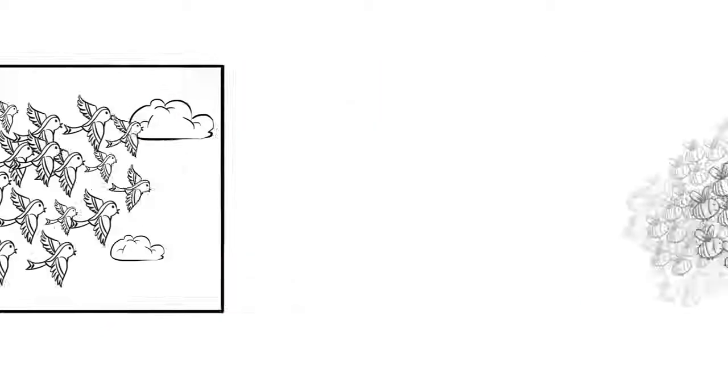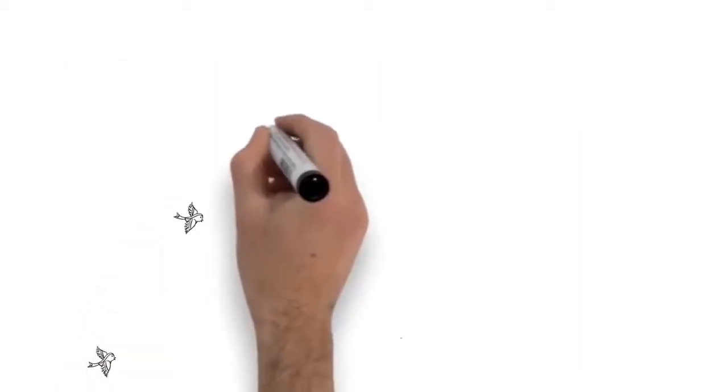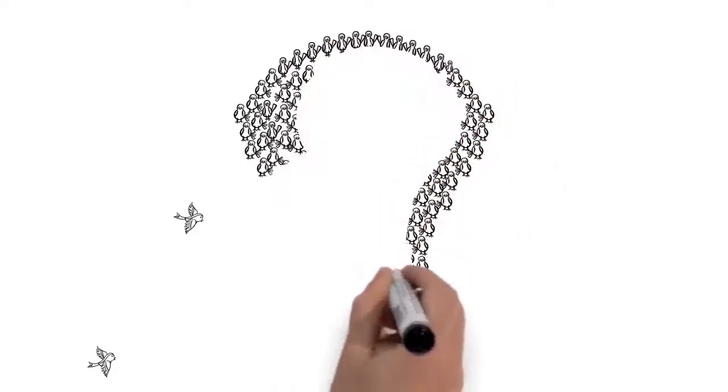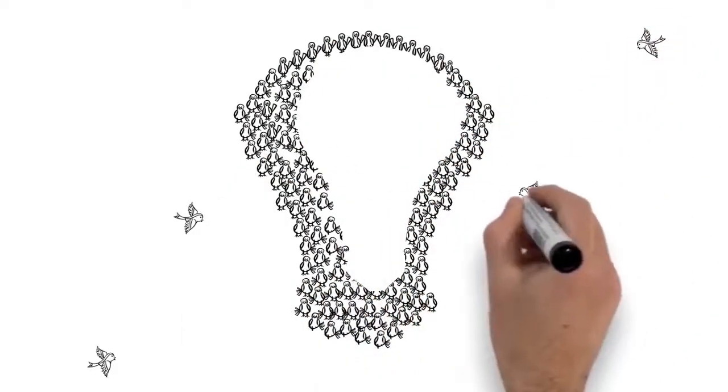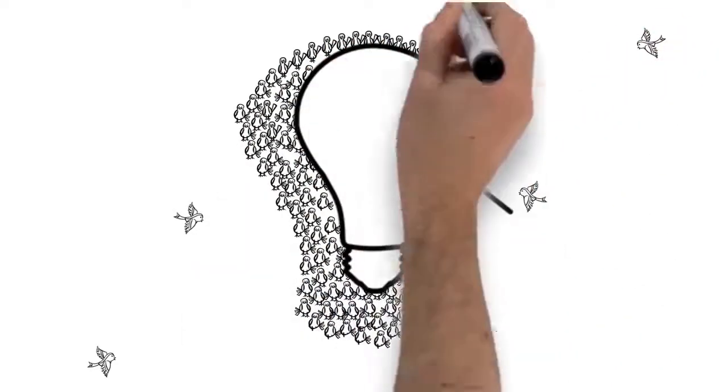Why do birds flock, bees swarm, and fish school? They do this because the groups are smarter when thinking together than the individuals would be on their own.